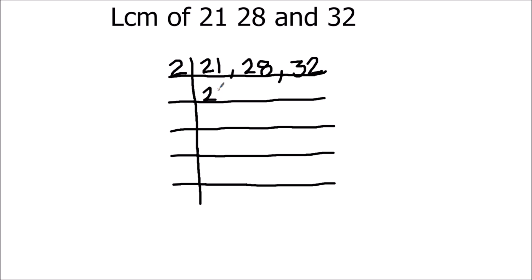21 is not fully divisible by 2, so we'll write it as is. 2 times 4 is 8, 2 times 1 is 2. For 32: 2 times 1 is 2, remainder 1 becomes 12, 2 times 6 is 12. We get 21, 14, 16.